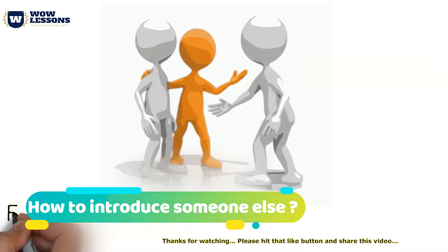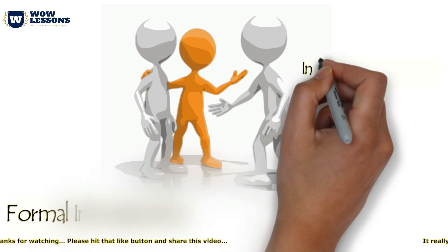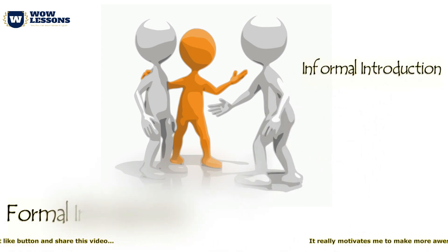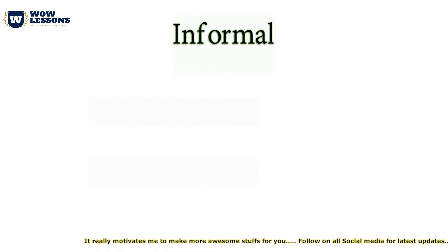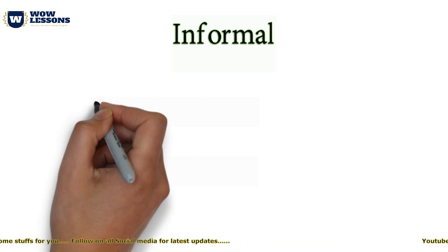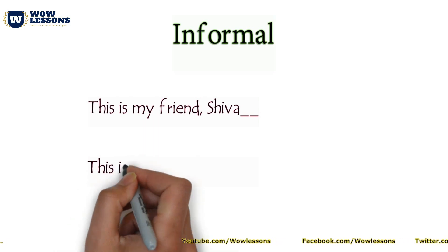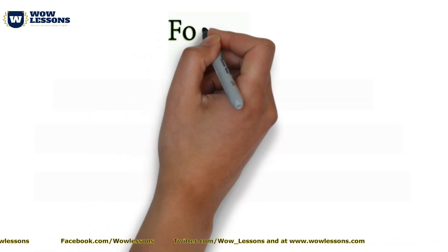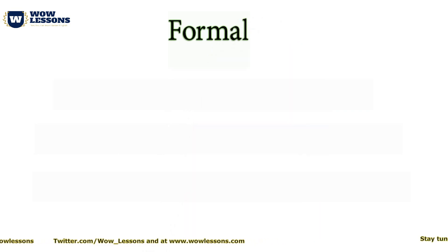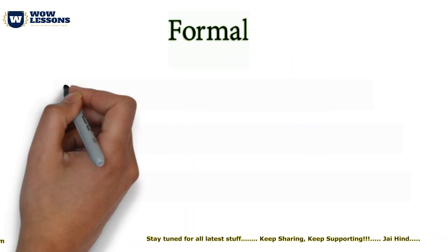Again, we will deal with two different situations: formal and informal. In an informal situation it's again nice and simple — just say 'this is.' For example: 'This is my friend Shiva,' or 'This is my sister Sunita.' Now let's have a look at the formal expressions for introducing someone else.